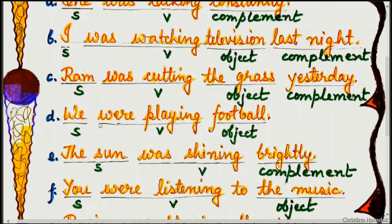Example D: We were playing football. 'We' is the subject, 'were playing' is the verb with additional -ing, and 'football' is the object.